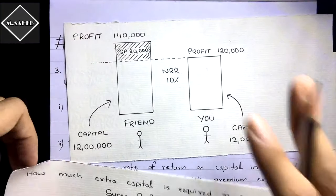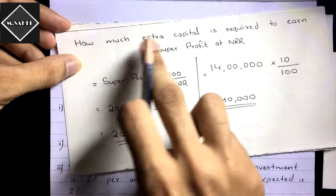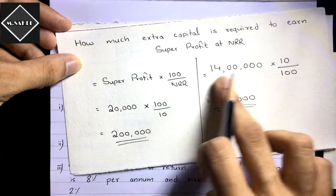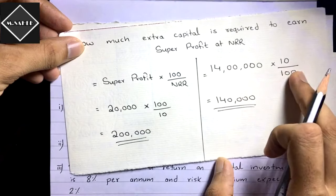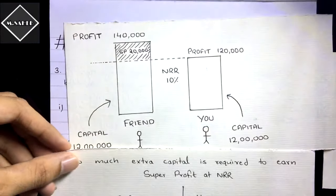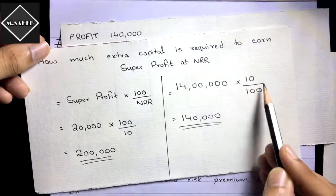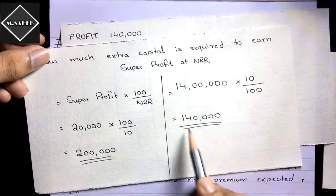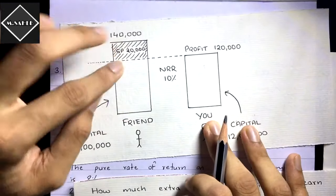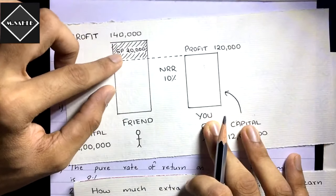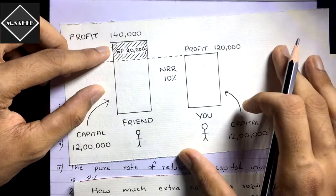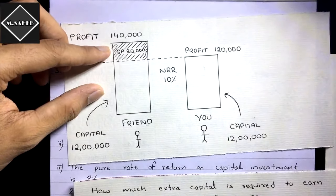That means the goodwill of this business is two lakh — you would require two lakh extra capital to earn the same profit as your friend. If you invest 14 lakh total, at 10 percent NRR, you would earn one lakh forty thousand — same as your friend. So that two lakh extra capital is the goodwill of your friend's business.